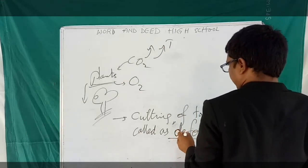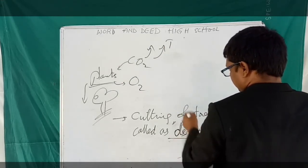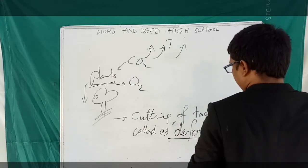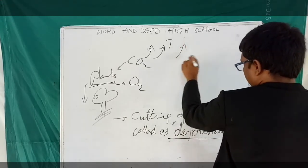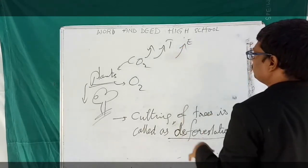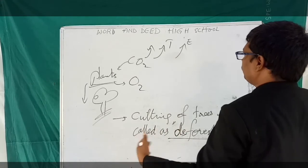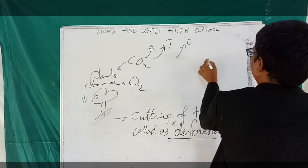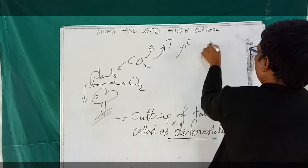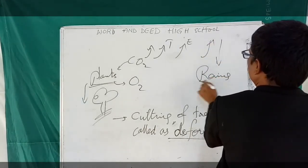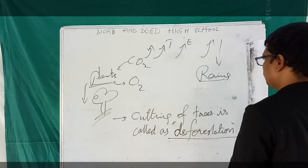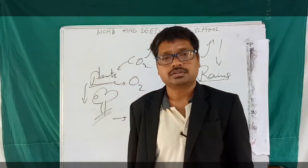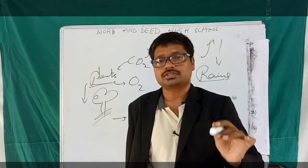More carbon dioxide in the atmosphere increases the temperature. Due to increased temperature, there is more evaporation — the water bodies will evaporate more and more. If there is more evaporation, there may be abnormal rains — either more or less. Rainfall will not be normal. Ultimately we are all affected. This is how deforestation affects our lifestyle.